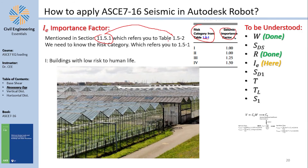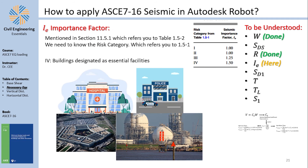There are four risk categories. Risk Category I: buildings with low risk to human life, such as greenhouses or agricultural facilities. Risk Category IV: essential facilities — things a government cannot function without, including emergency services, military installations, and strategic infrastructure. Risk Category III: buildings that could pose a substantial risk to human life.